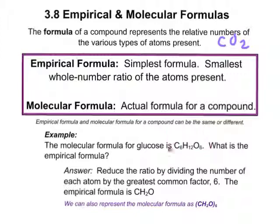Let's look at glucose. This is the molecular formula for glucose. When we see a glucose molecule, it has 6 carbons, 12 hydrogens, and 6 oxygens, and they are all bonded in a very specific way. We can reduce that molecular formula to an empirical formula — the very simplest formula — simply by dividing the number of each atom by its greatest common factor, which is 6. We can see 6, 12, and 6. We reduce that molecular formula to the empirical formula of CH2O.